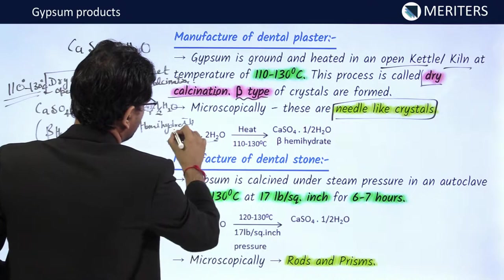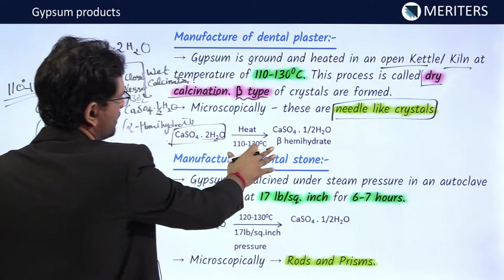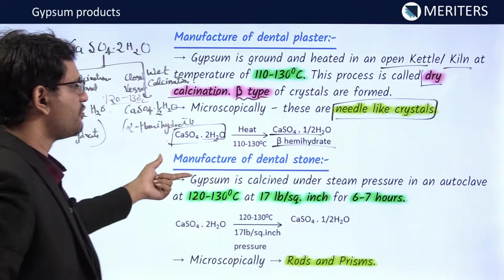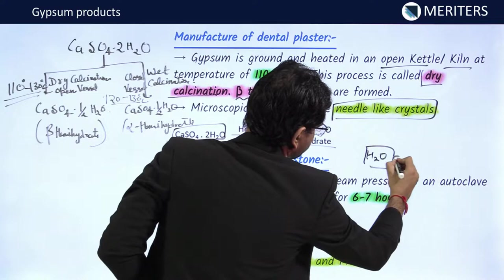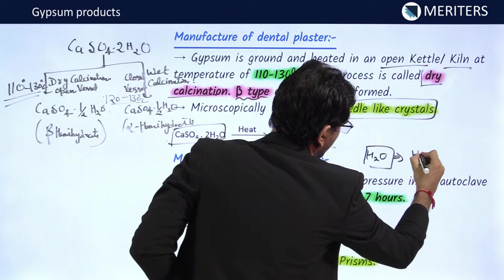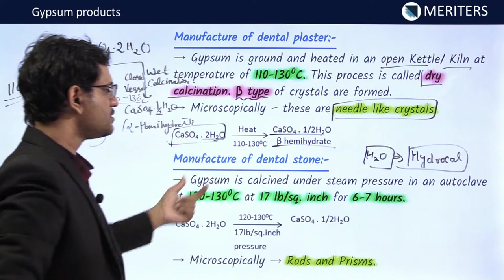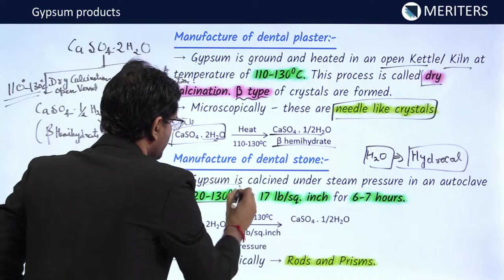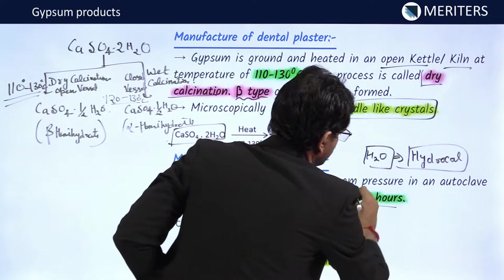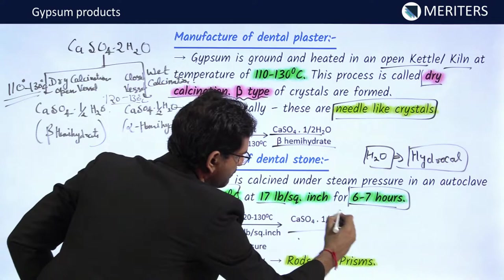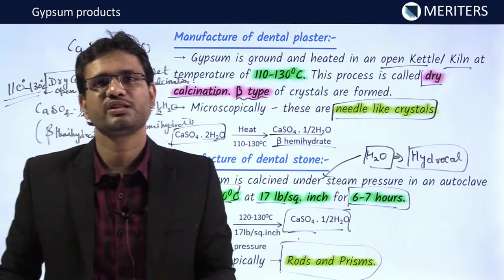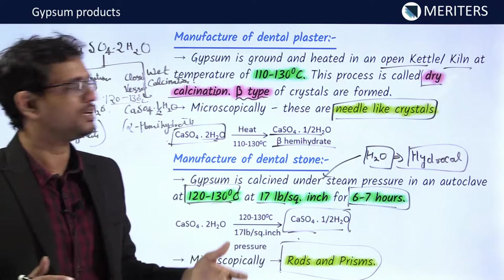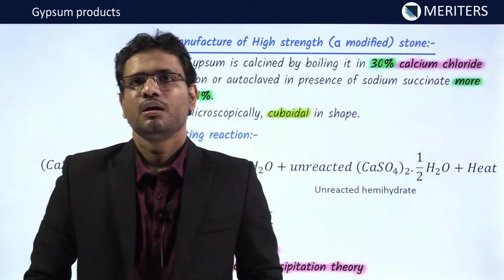The setting reaction: calcium sulfate dihydrate is heated at 110–130°C to obtain beta hemihydrate. For dental stone, wet calcination is used — gypsum is calcined under steam pressure in an autoclave at 120–130°C, 17 lb per square inch, for six to eight hours, yielding alpha hemihydrate. Because water is incorporated during manufacturing, alpha hemihydrate requires less water than beta hemihydrate to rehydrate back to gypsum.